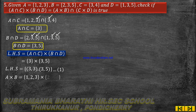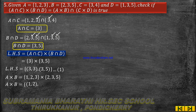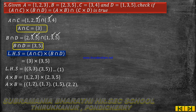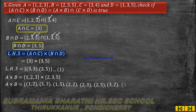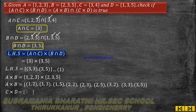Now for the RHS, first find A×B: elements of A = {1,2,3} cross elements of B = {2,3,5}. So A×B = {(1,2),(1,3),(1,5),(2,2),(2,3),(2,5),(3,2),(3,3),(3,5)}.